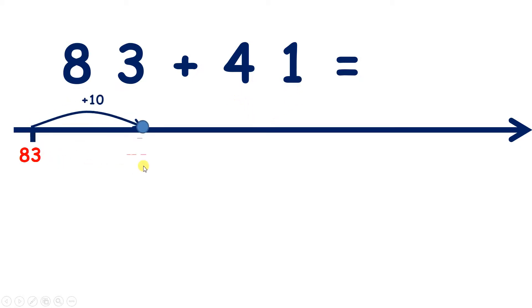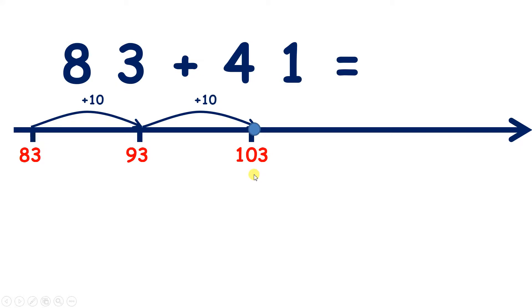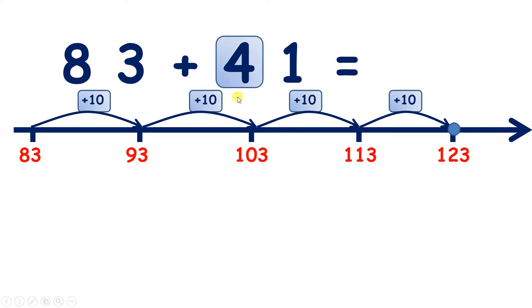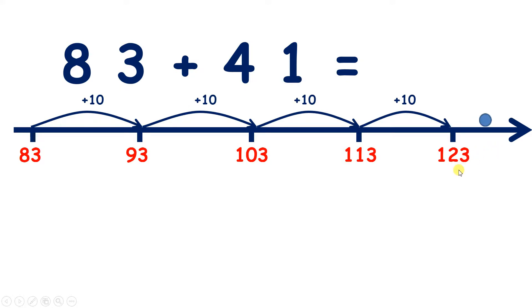Counting on one 10 takes us to 93. Another 10 takes us to 103. Then we get to 113, and our fourth 10 takes us to 123. So we've added 4 tens, now we just need to add 1 unit.